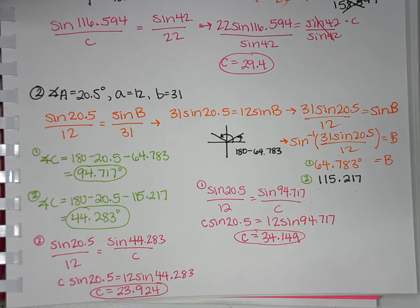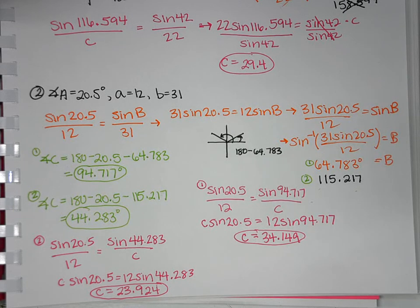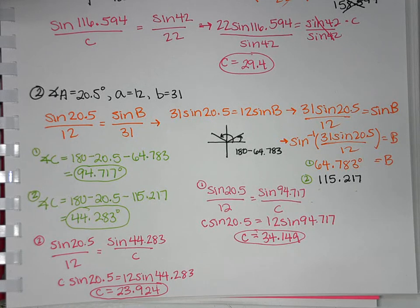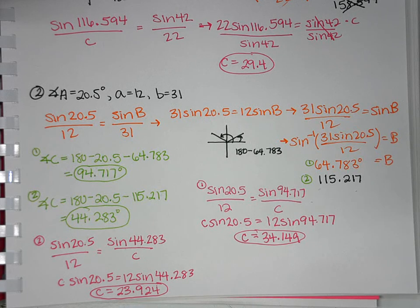There's one more type in the ambiguous case — the no solution scenario — which we'll go over in class tomorrow. This is the last new topic of the unit, so please come ready with questions. If we need to go through it again, just let me know, and we'll get to work in class.